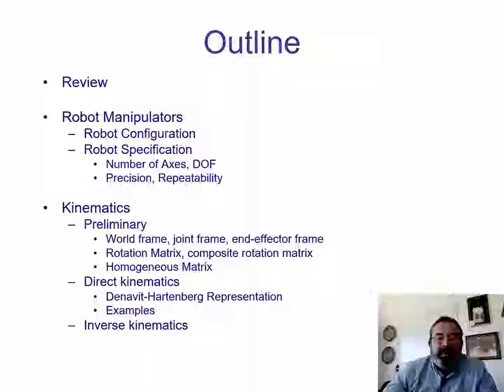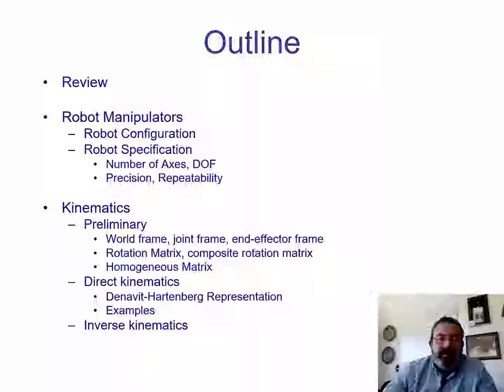Then we will go further on kinematics. We're going to talk about some preliminary ideas like the world, joint, and end effector frames, and some transformation matrices, particularly rotation, composite rotation matrix, and homogeneous transformation matrix, which includes also a translation. Then we will talk about forward kinematics, including the Denavit-Hartenberg representation, which is a convention in order to obtain these kinematics. It is generally accepted as a universal method. We are going to see some examples, and then we're going to go on to inverse kinematics.